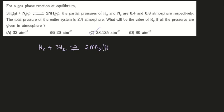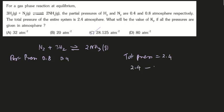This is the equilibrium Haber process. The partial pressures of all species go to equilibrium. The total pressure is 2.4. The pressure of ammonia will be 2.4 minus 1.2, which gives you 1.2 atm for ammonia.